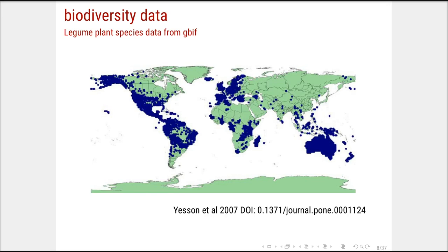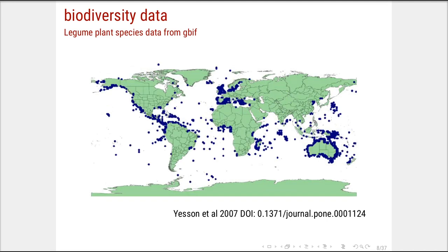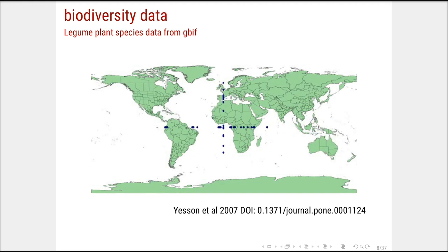When we think about biodiversity data, we are thinking about records of species in space, and those records also have a timestamp. For instance, these are data for legume plant species from the Fabaceae family — terrestrial plants that should occur on continents or islands. Data from GBIF is very diverse: we have good data, but we also have data that falls in the ocean, which should not be there for terrestrial plants. We also have data with zeros as latitude and longitude, showing a huge variety in the quality of available data.